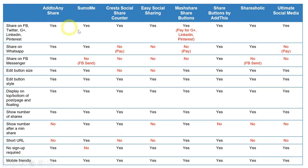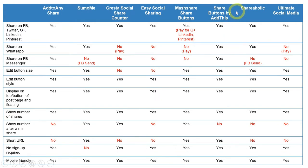Of all the plugins I've tested, the ones you should look at are those with the fewest 'no's in the feature table — Sumo, AddToAny Share, which only has two no's, and Share Buttons by AddThis, which only has one no. These are the top three plugins I think you should try.